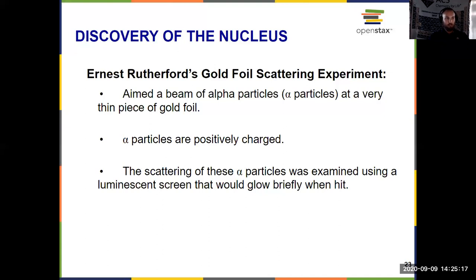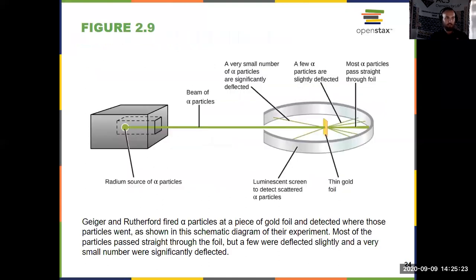So the scattering of those alpha particles was gathered using a screen that would glow when they were hit with the scattered alpha particles. Looks like this, and these are the ones that are diverted or deflected that led to the discovery of the nucleus. Again, most went through, but some of them were coming back.